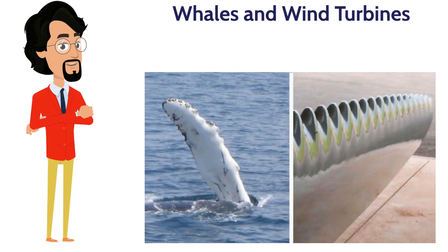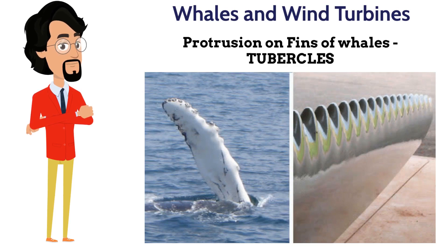Now let us see how whales and wind turbines are related. Though whales are the largest creatures, they are widely aerodynamic. The fins of the whale act like wings of an airplane. The unique feature of the whale is the protrusion on its fins called tubercles. This unique feature is being used in the blades of wind turbines, making the wind turbine more efficient and quieter than the original.